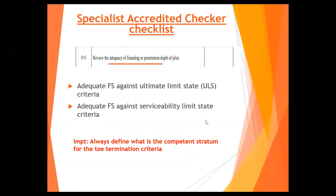Now review accuracy of founding - this is very important, very important, especially against SLS. Define what is the competence short-term for the total domination - we call it the 'church street failure'. The competence short-term was defined as SPT 100, and they wanted five meters into SPT. Yet 66 out of 73 piles did not achieve five meters. I don't know why - probably along the way they found a more competent short-term that allowed them to use a shorter seating length. For example, if you use SPT 100 originally, then on site it's all SPT 100.